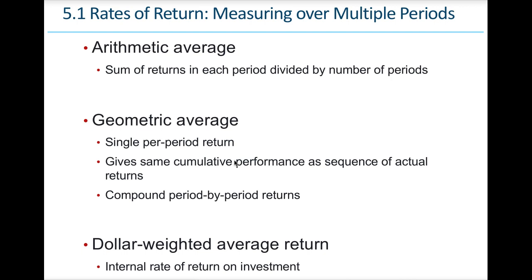There are a couple different ways we can measure return over different periods of time. We have three mathematical formulas: an arithmetic mean — mean is just another word for average — a geometric mean, and a dollar-weighted average return. The arithmetic average is just the sum of annual returns divided by the number of years — the average of past returns. It's a common forecast for predicting future returns, though past returns are not a 100% accurate predictor of future returns.